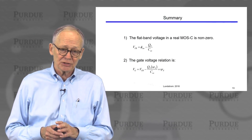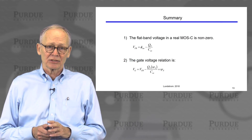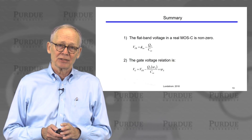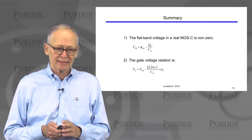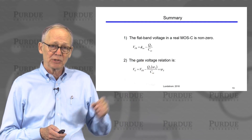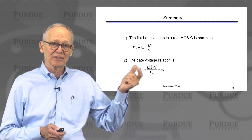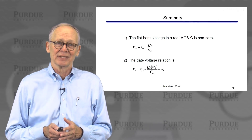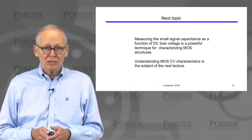Just to summarize this lecture: the flat band voltage in any real MOS capacitor occurs at a non-zero voltage that is easy to compute — the metal-semiconductor work function difference minus the fixed charge over the oxide capacitance. The gate voltage relation that relates the surface potential to the gate voltage is easy to adjust — we simply add the flat band voltage, which was zero in an ideal structure but is not zero in any real structure.